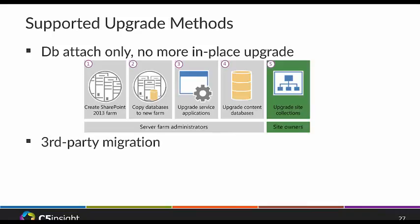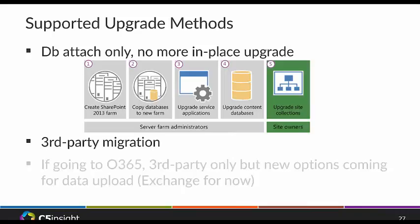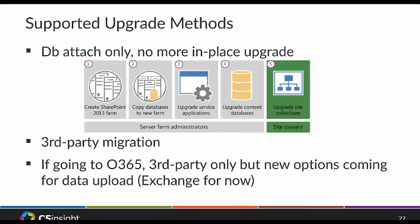Your other option is third-party tool migration. You're still creating a new farm, but instead of taking your databases over, you use a third-party tool for selective content migration — bringing over specific sub-sites, site collections, lists, or libraries on an individual basis. If you're migrating to 365, your only option is actually a third-party tool, unless you're manually uploading content. Microsoft is building an import service but currently it's only available for Exchange, not yet for SharePoint.